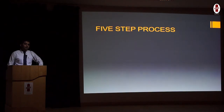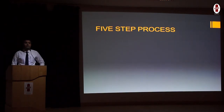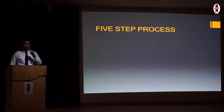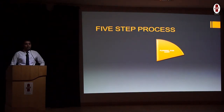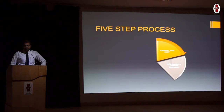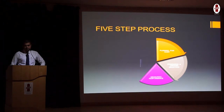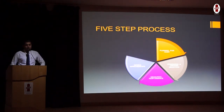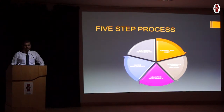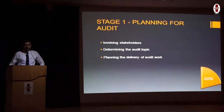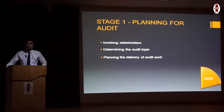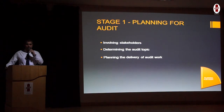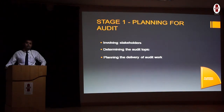Let us look at how a clinical audit is carried out in a clinical setting — it is basically a 5-step process. Firstly, we need to plan for what kind of audit we want to do. Then formulate standards and criteria selection. Then measure performance. Then make improvements and sustain those improvements. In the first stage when we plan for the audit, we have to involve various stakeholders, determine the audit topic, and then plan for the delivery of the audit work.